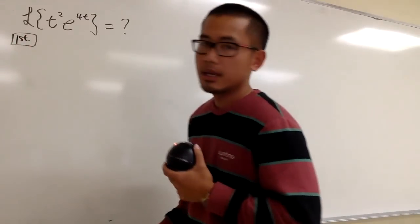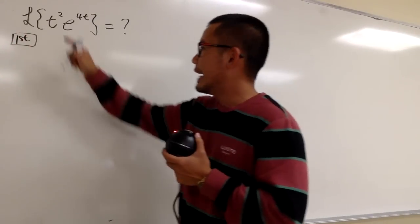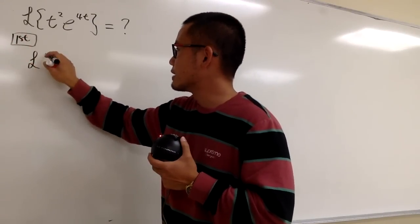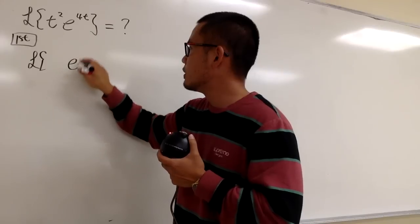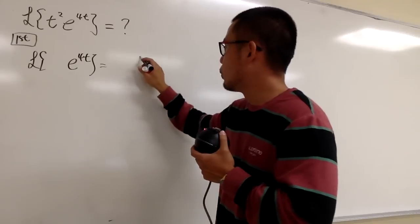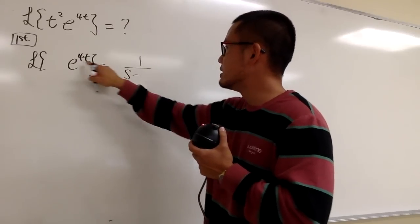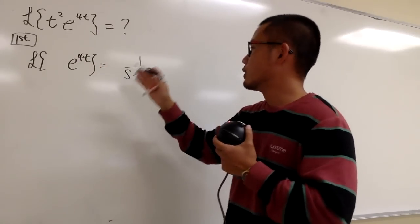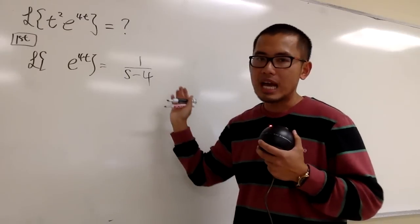So this is the first way. Let's say I know for a fact that the Laplace transform of e to the 4t, this right here we know is 1 over s minus the a value, which is 4. So 1 over s minus 4, this is what we have.